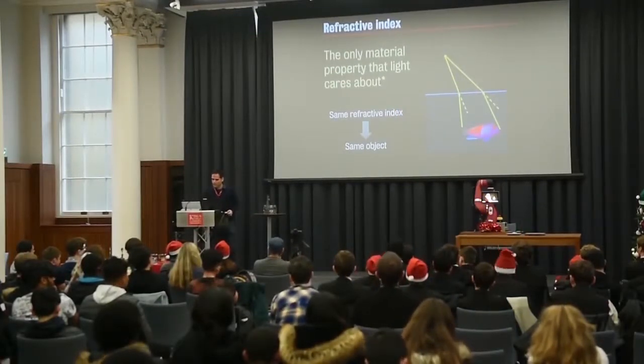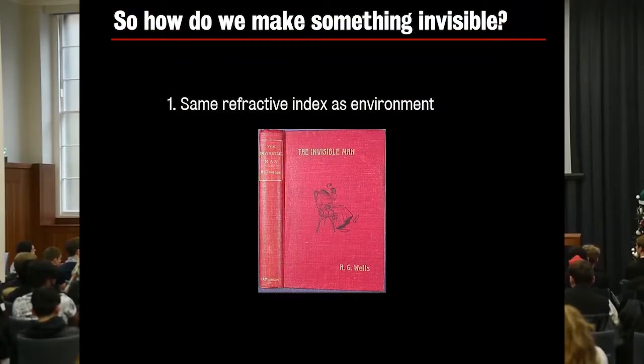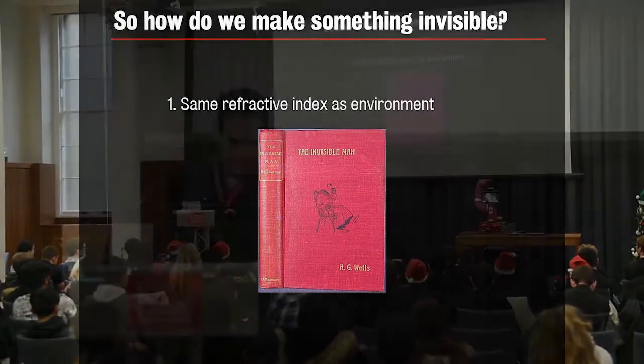So this suggests a way of achieving invisibility. If you can have the same refractive index as your environment, you would be invisible. And this is what the famous novel The Invisible Man said. So you can inject something that makes your refractive index equal to that of air. And we have a demonstration here for you.